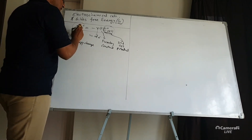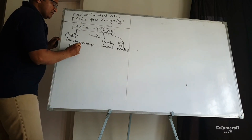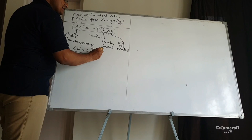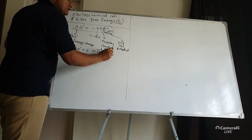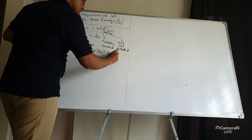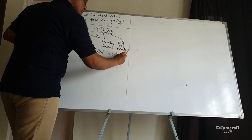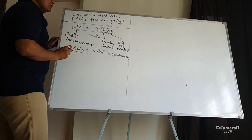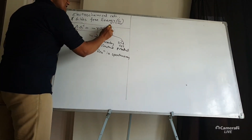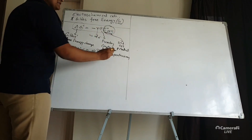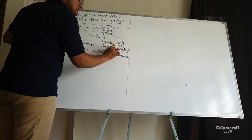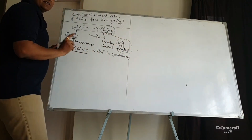If ΔG⁰ is less than zero, then the reaction is spontaneous — it occurs on its own. So if ΔG⁰ is negative, that means E⁰ at that time must be positive. For electrochemical cells, the standard cell potential is positive.